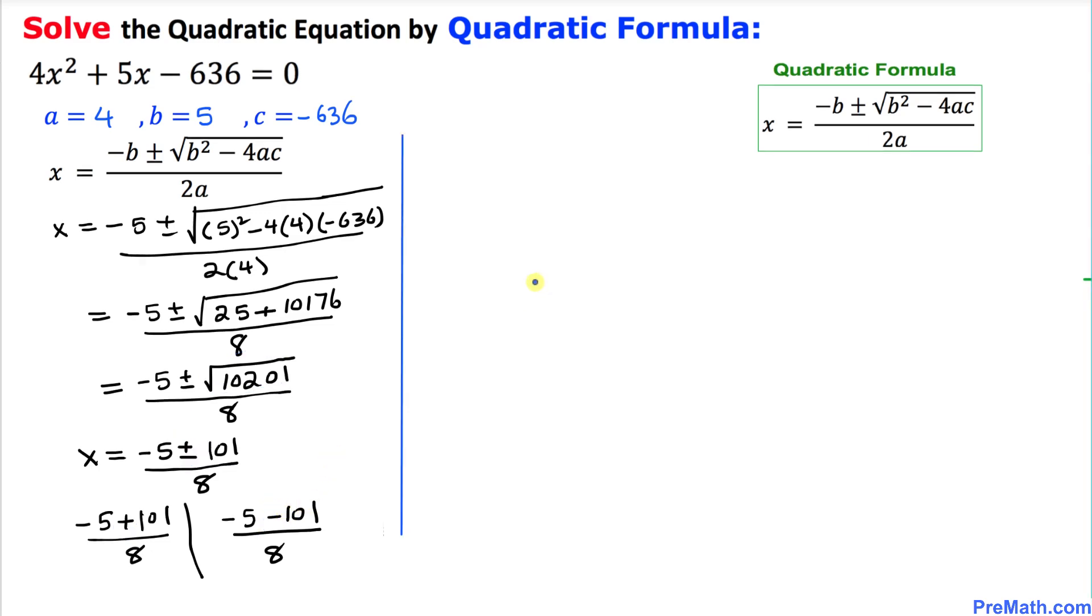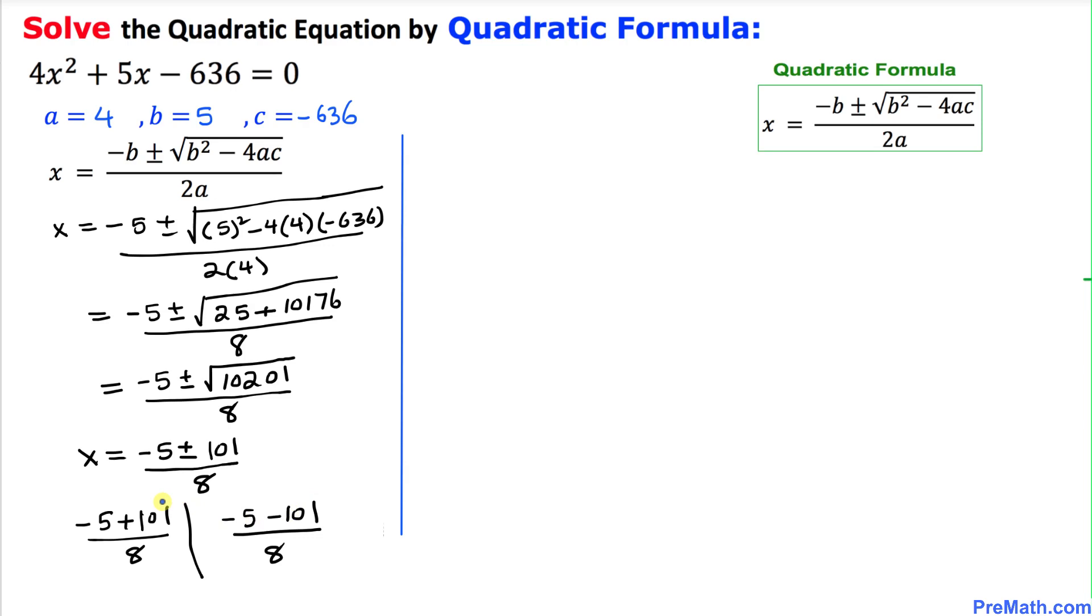Now let's move on to the right-hand side as we are running out of space. Let's simplify these two fractions further. That is going to give us, the first one, 96 divided by 8, and the second fraction is going to give us negative 106 divided by 8.